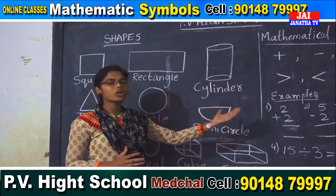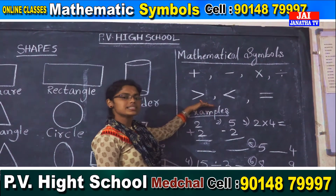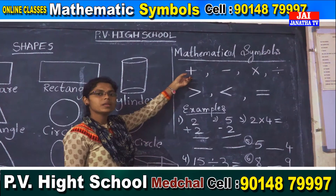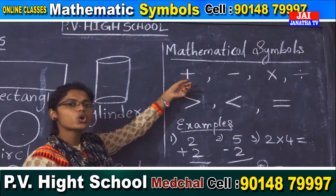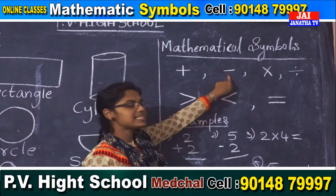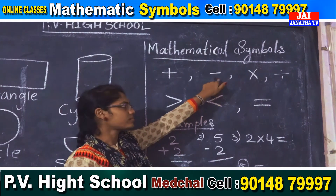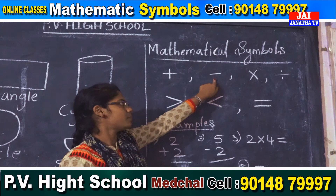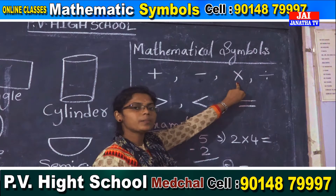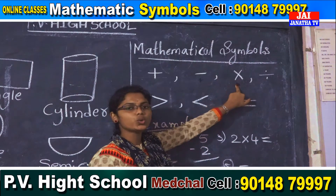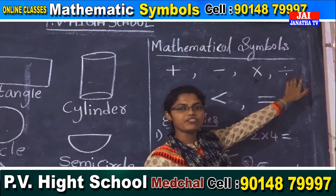And now let me discuss about mathematical symbols. These are the basic mathematical symbols. The first symbol is called plus — it is used for addition. The second symbol is minus — it is used for subtraction. And this is into — it is used for multiplication.